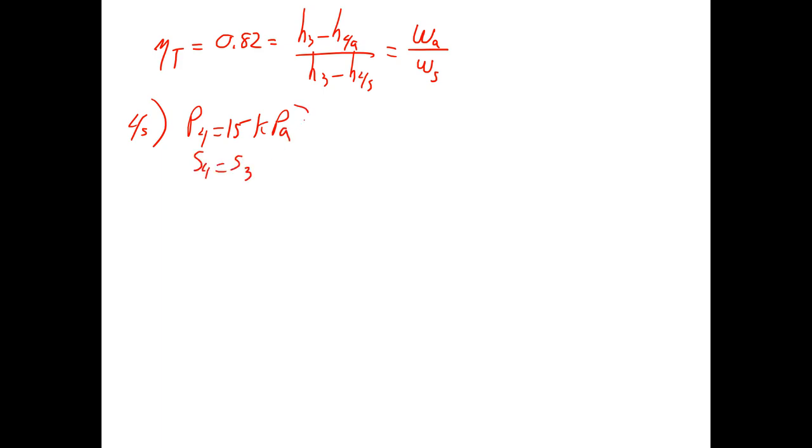For the isentropic state coming out, we have the pressure at 15 kPa, the entropy being the same. That gives us an exiting quality of 0.85 for the isentropic case. H4 isentropic would be 2251 kJ/kg.